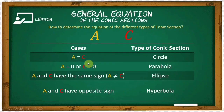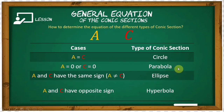For the second case: if a is equal to 0 or c is equal to 0 — meaning one of the second-degree terms, either x² or y², is missing — therefore the equation represents a parabola.